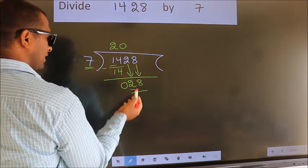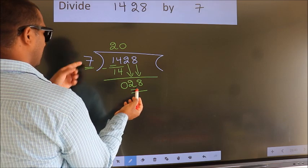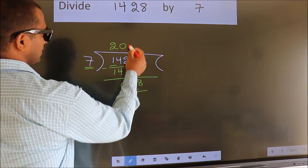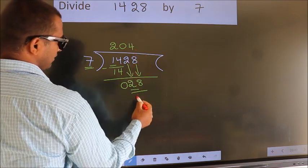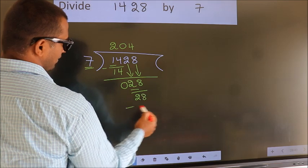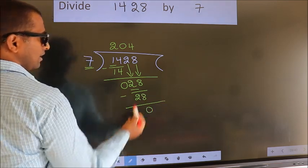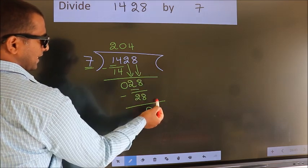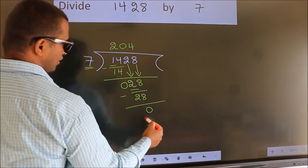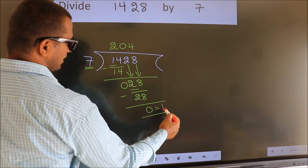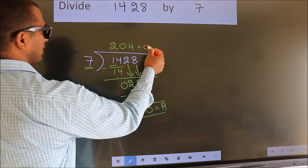So we have 28. When do we get 28? In the 7 table. 7 times 4 is 28. Now we subtract and get 0. No more numbers to bring down, so we stop here. This is our remainder. This is our quotient.